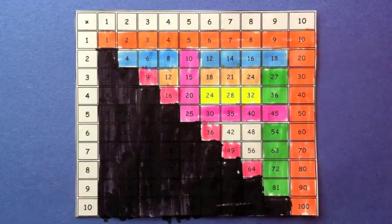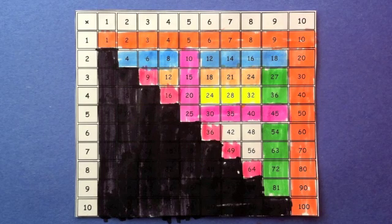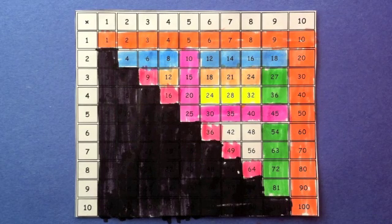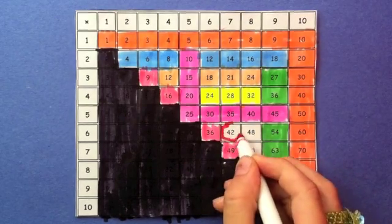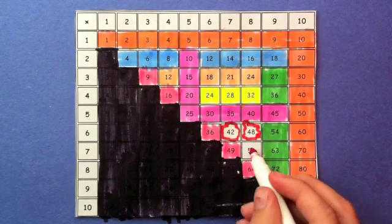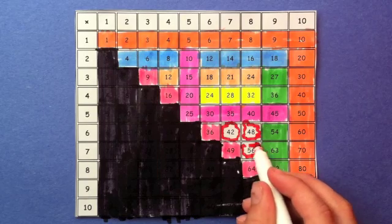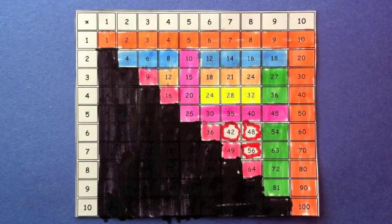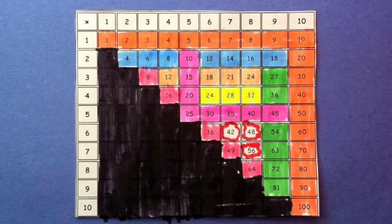The last 3 are the hardest, but we can memorize 3 facts. 6 times 7 is 42. 6 times 8 is 48. And 7 times 8 is 56. And now we have no more multiplication facts to memorize.